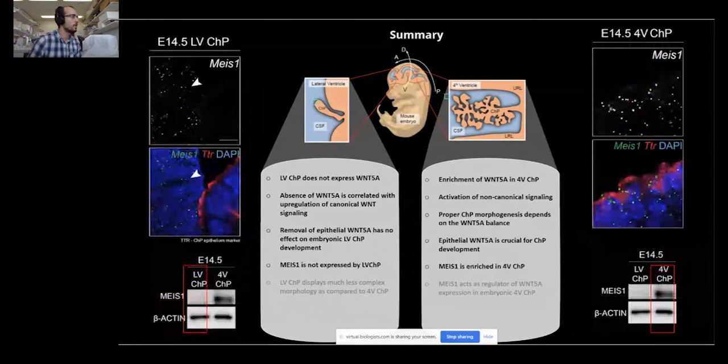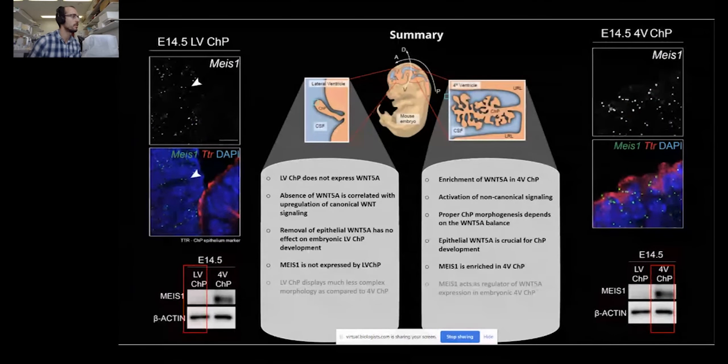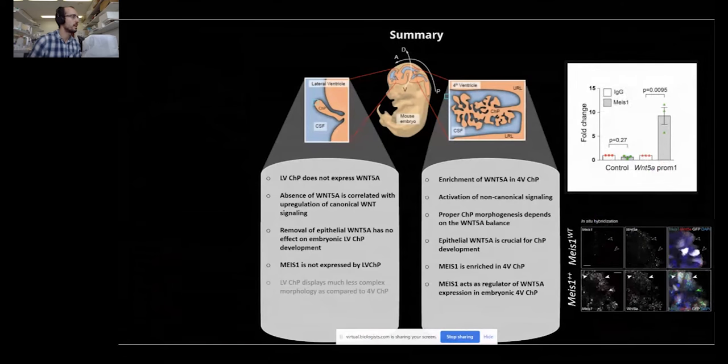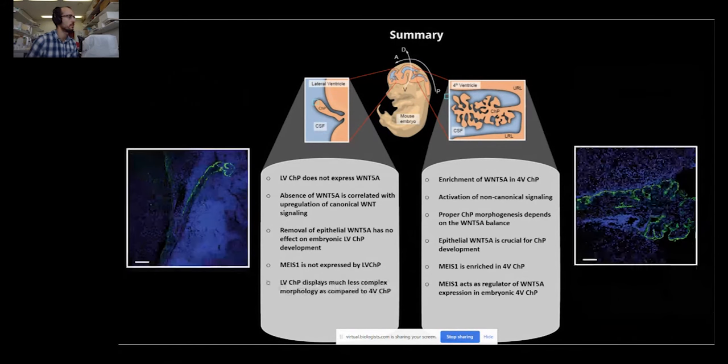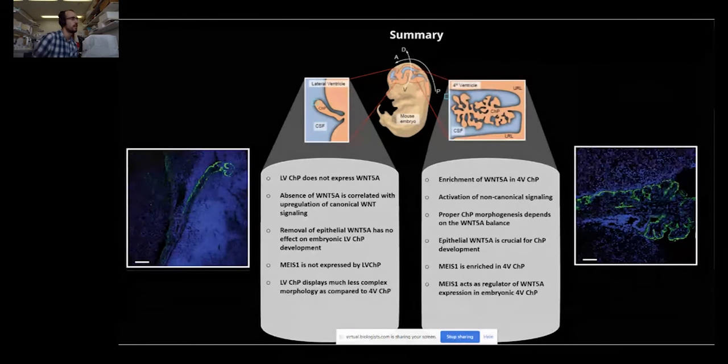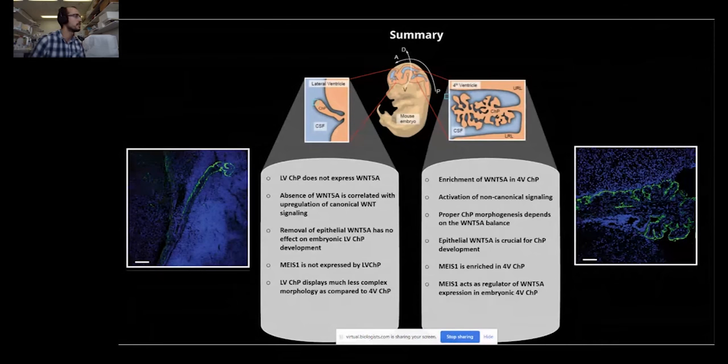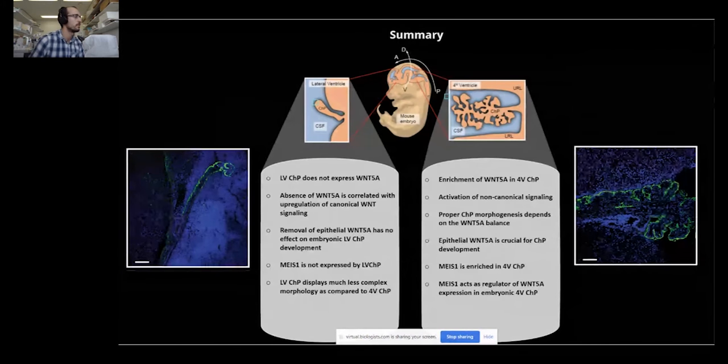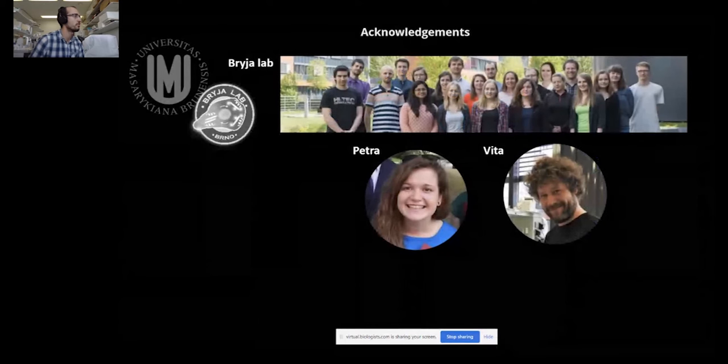We also showed that MEIS1 is a factor that is again spatially enriched in the fourth ventricle choroid plexus as compared to the lateral ventricle choroid plexus, and it acts as a regulator of WNT5A expression in the embryonic fourth ventricle choroid plexus. Finally, I just want to highlight this interesting difference in the morphology between these two plexuses, which may be partially driven by WNT5A.